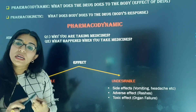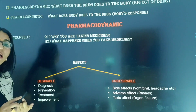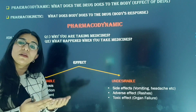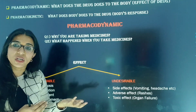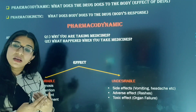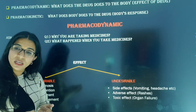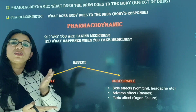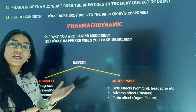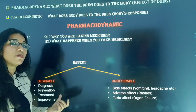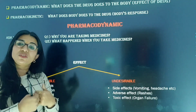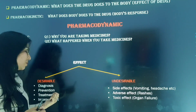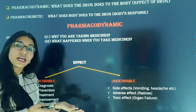Desirable means what we want — joh hume chahiye. What do we want? We were sick, so we want our disease to be diagnosed, to be prevented from it, and to receive treatment so we can recover. So the desirable effect is: diagnosis, prevention, treatment, and the body getting improved — that is the desirable effect.